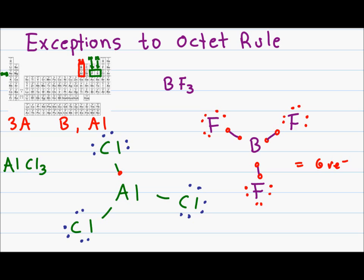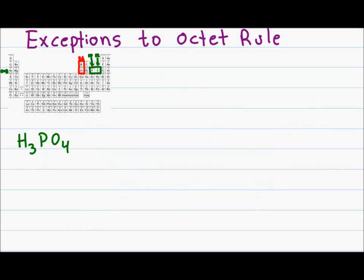The molecule AlCl3 behaves in the same way. Aluminum starts out with three valence electrons. Each of the chlorines provide three valence electrons, giving me a total of six electrons for aluminum in AlCl3. Let's look at phosphoric acid in an example where it has more than eight electrons in its valence shell.